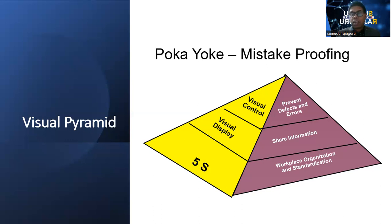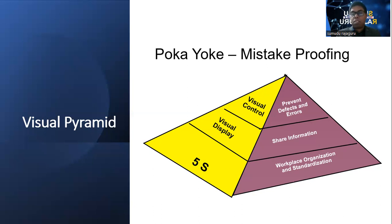So we can understand that if we want to prevent some mistakes, we should have given some mechanism in the operation and manufacturing flow. That means employees cannot make a mistake because of that mechanism. That can be an attachment, a separate machine part, or whatever — those things are called mistake-proofing.